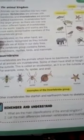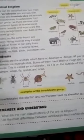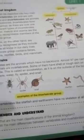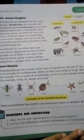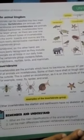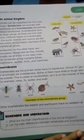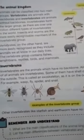Invertebrates are animals that have no backbone. Many of them have a hard outer covering or strong skin on the outside which protects them. Examples of invertebrates include wasp, fly, spider, snail, starfish, and earthworm.